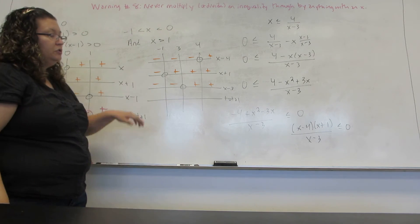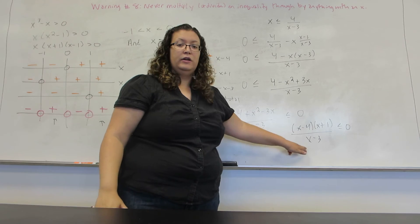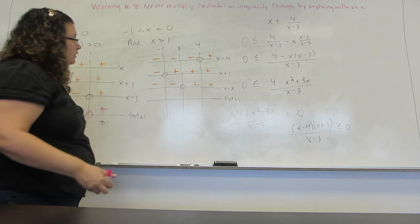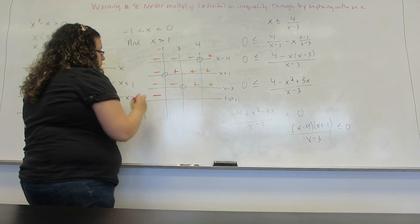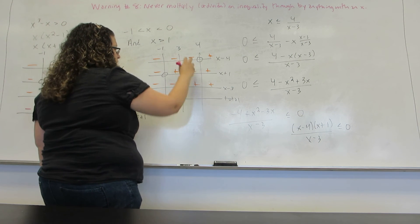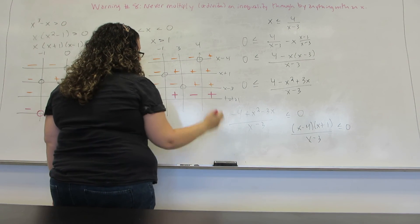And lastly, I have to do the total. Now, this one, they're not all multiplied. The X minus 3 is actually a division. But with pluses and minuses that doesn't matter. Three negatives makes a negative. Two negatives makes a positive. One negative makes a negative. And all positives makes a positive.